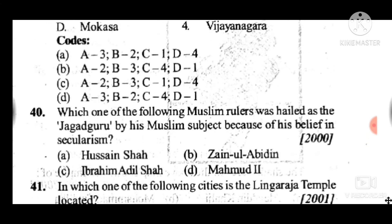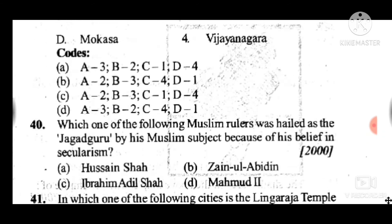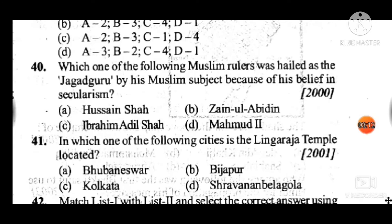Question 40: Which one of the following Muslim rulers was hailed as the Jagat Guru by his Muslim subjects because of his belief in secularism? Answer to question 40 is C: Ibrahim Adil Shah. Question 41: In which one of the following cities is the Lingaraja temple located? Answer to question 41 is A: Bhubaneswar.